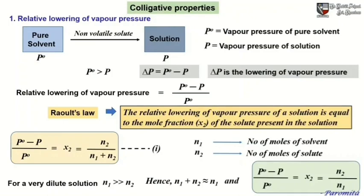Our first colligative property is relative lowering of vapor pressure. We will prepare a solution by adding a non-volatile solute to the pure solvent. When a non-volatile solute is added to a pure solvent, the vapor pressure of the resulting solution is lowered. Since the solute is non-volatile, it has negligible contribution towards the vapor pressure, so the vapor pressure of the solution is nearly the vapor pressure of the solvent.